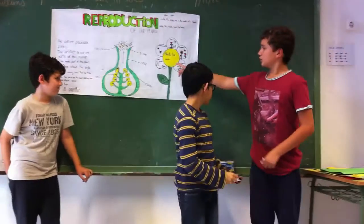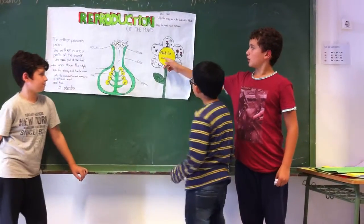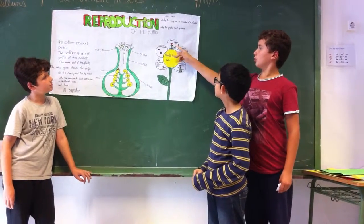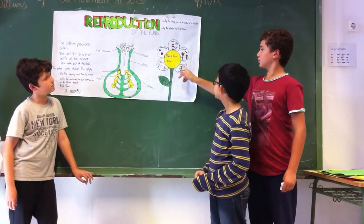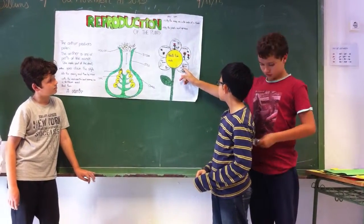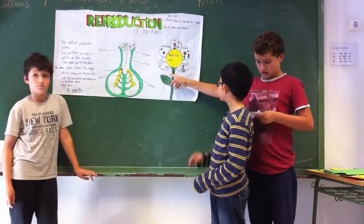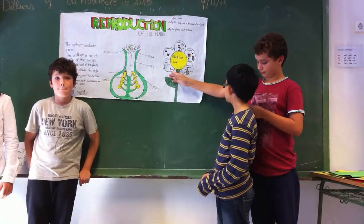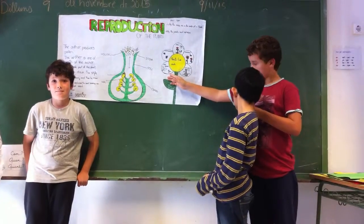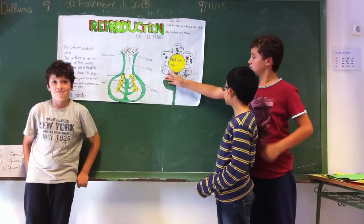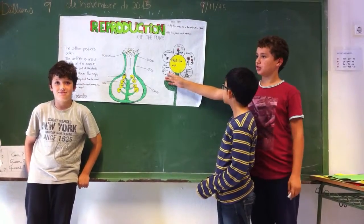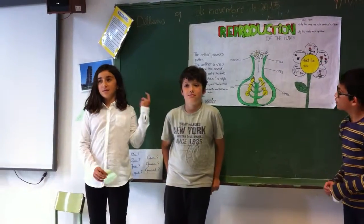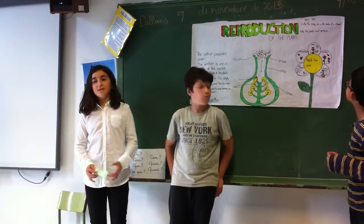The plant life cycle includes: germination, growth, flowering, and fertilization. And now the main ideas.